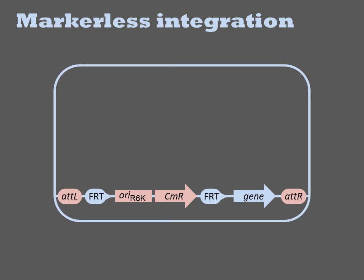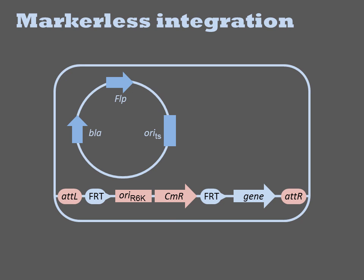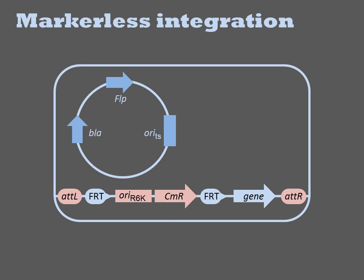In the CRIM system, the helper plasmid is first used to insert the CRIM into the genome with the integrase, and then that plasmid is cleared. The cell is then transformed with a second helper plasmid containing the FLP recombinase. The recombinase excises the intervening region of the DNA, leaving behind only the FRT site.